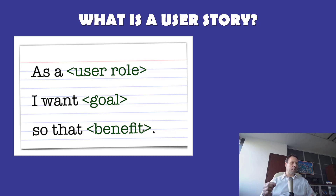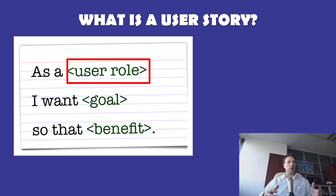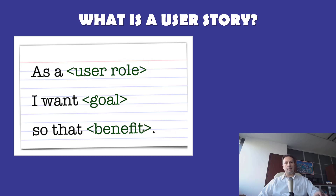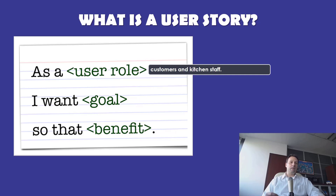User Stories follow a very specific format: As a blank, I want to blank, so that blank. The first blank signifies the stakeholder role for whom the requirement is being formed. You might use words like administrator or guest user. In our example of a restaurant menu application, the stakeholders are customers and kitchen staff. These don't have to be specific people — just a general audience for the requirements — and this helps narrow down who the requirement is meant to support. It specifies the who of the requirement.